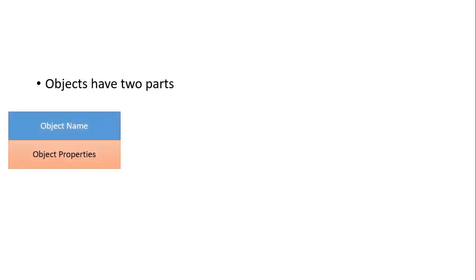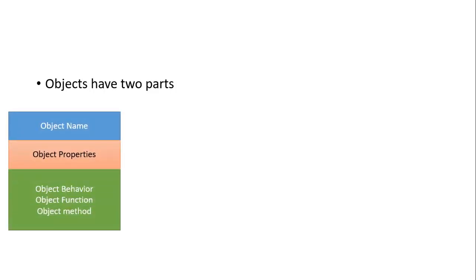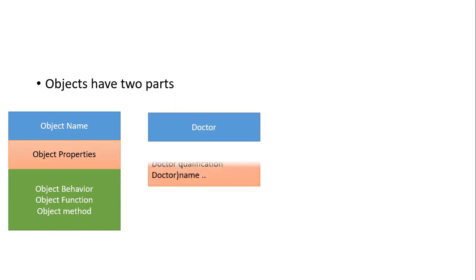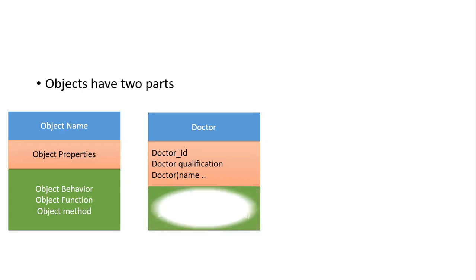Objects have two parts: object properties and object behavior — also called object functions or methods. For instance, consider the class Doctor. A doctor could have properties or data such as ID, qualification, name, age, height, and a doctor number assigned to that particular doctor. The doctor could also have some behavior, like scheduling appointments or retrieving doctor details — these come under the block of object behavior, function, or method.